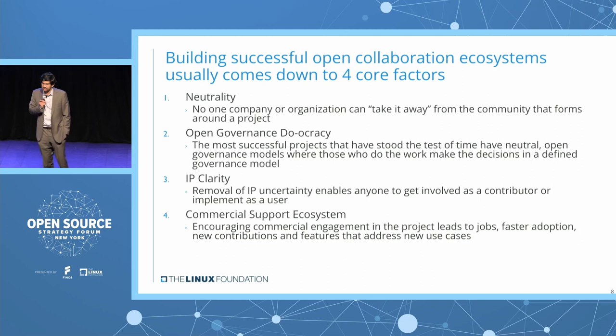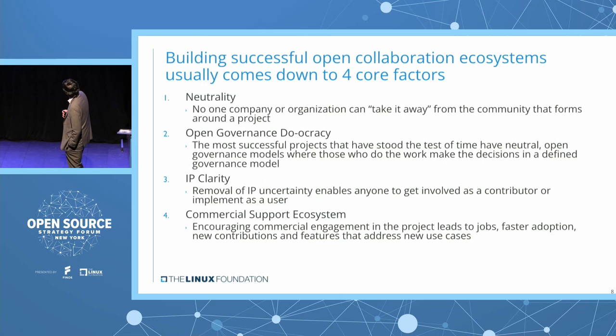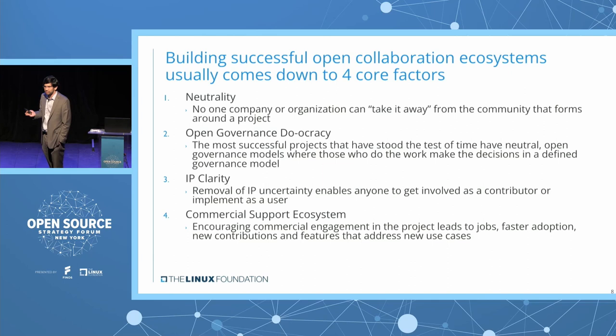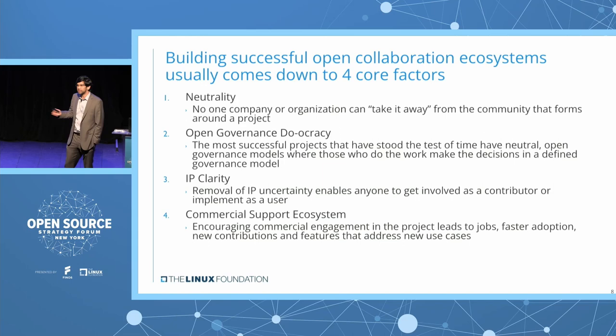What does it take to build a successful ecosystem? You can break it down into four key areas. Neutrality — having that forum to collaborate and work together. The open governance model — clearly laid out charter rules, a set of ground rules to play by. Clarity around IP ownership — the licensing for the software, who contributed what and how you can use it. And then building out that ecosystem: encouraging commercial engagement, opening it up to recruiting channels, adoption, improving contributions in terms of features and new developers, and building out use cases.